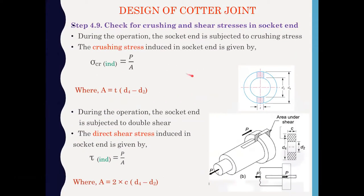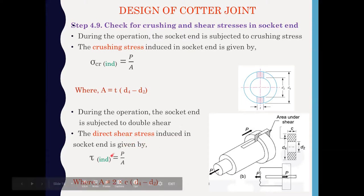Similarly, we can find the crushing and shear stress induced in the socket end. Sigma_cr = P / A, where A = T × (D4 − D2). The direct shear stress induced in the socket end is similarly given by tau = P / A.